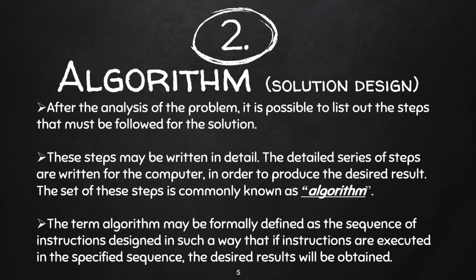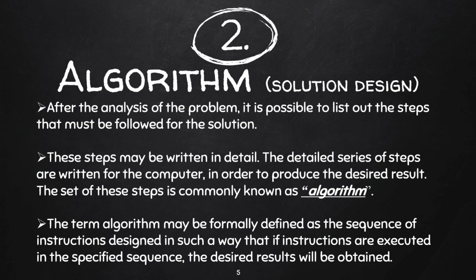So what is algorithm? Algorithm is a step-by-step process to get the solution for a problem. In simple language, the term algorithm may be formally defined as a sequence of instructions designed such that if the instructions are executed in the specified sequence — in the same order — the desired result will be obtained. If you write the steps of what to do, when to do, and how to do, and follow them, you'll get the solution.